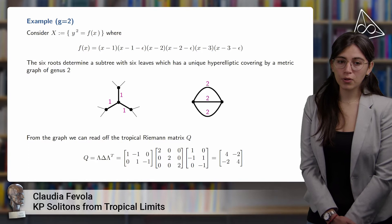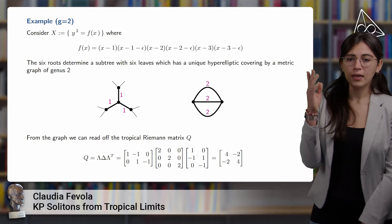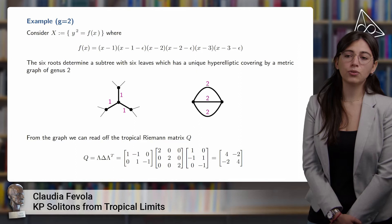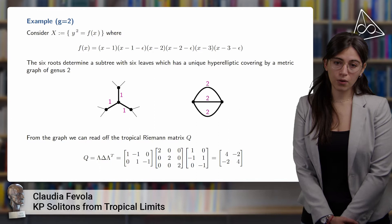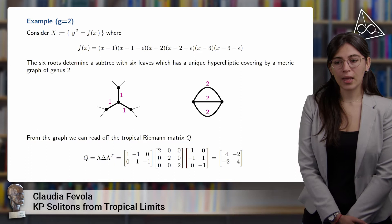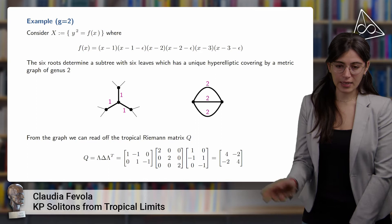For example, consider a genus 2 hyperelliptic curve defined by the polynomial y² = f(x), where f(x) is a polynomial with six distinct roots. These six distinct roots determine a subtree with six leaves, as shown on the left, which has a unique hyperelliptic covering bipartite graph of genus 2. From the graph we can read off the tropical Riemann matrix Q, as described.